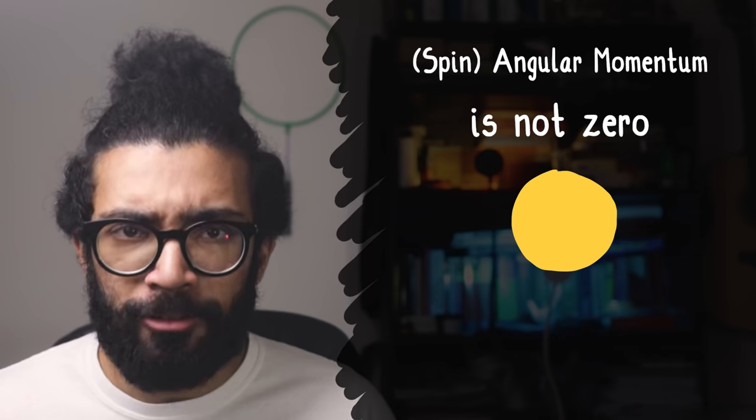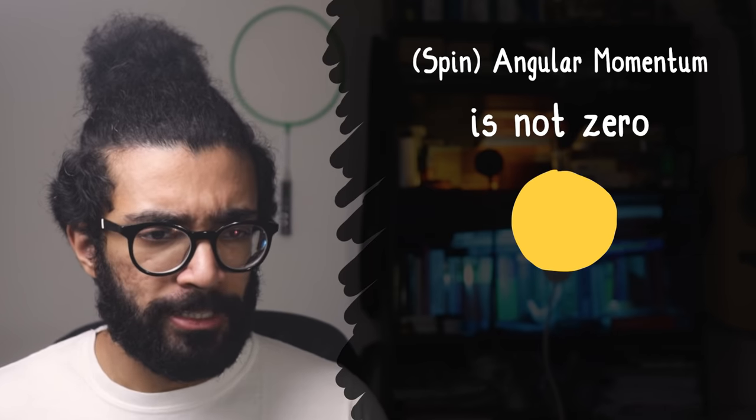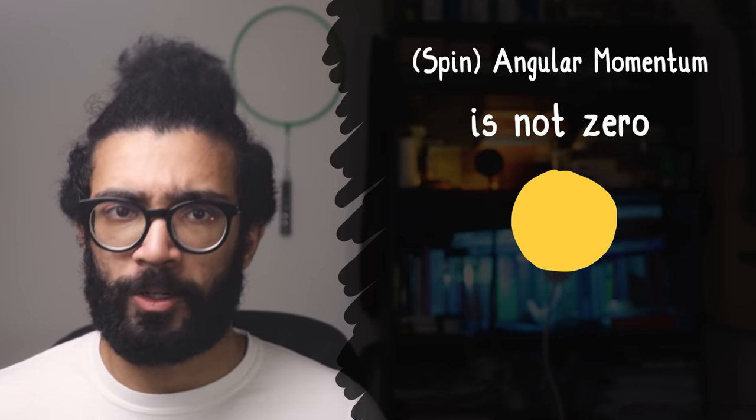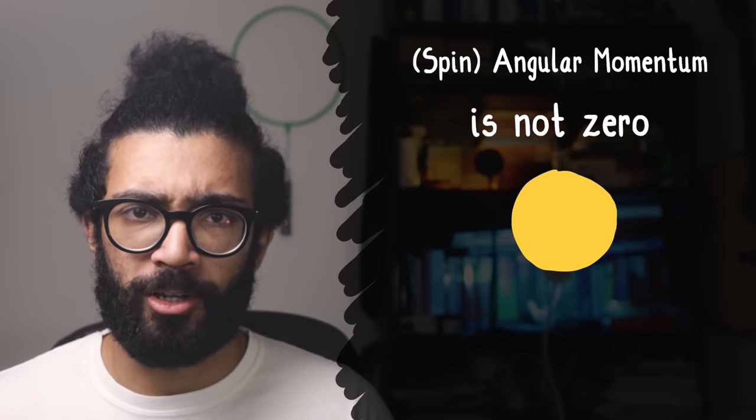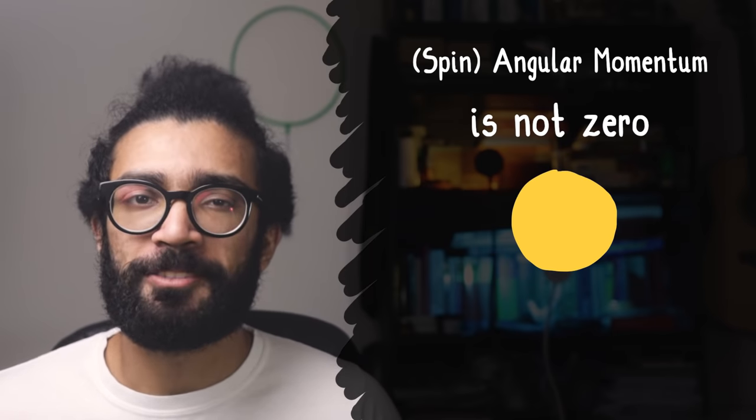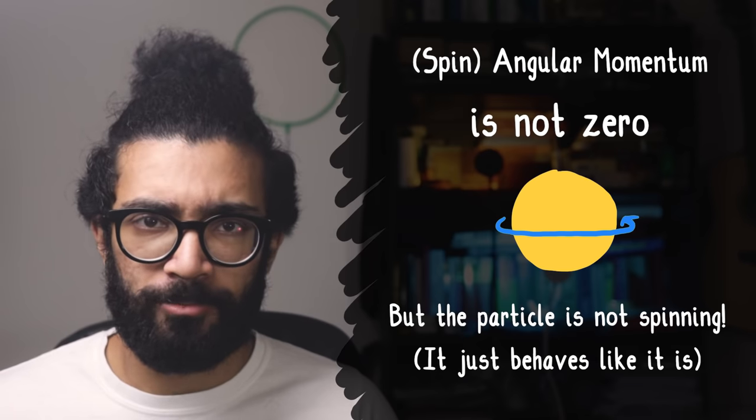The interesting thing about spin though, is that certain particles seem to have inherent angular momentum. That is, it's not caused by them rotating about another object, or spinning around, or moving along a curved path. They seem to behave as if they are spinning. Hence why we call it spin.